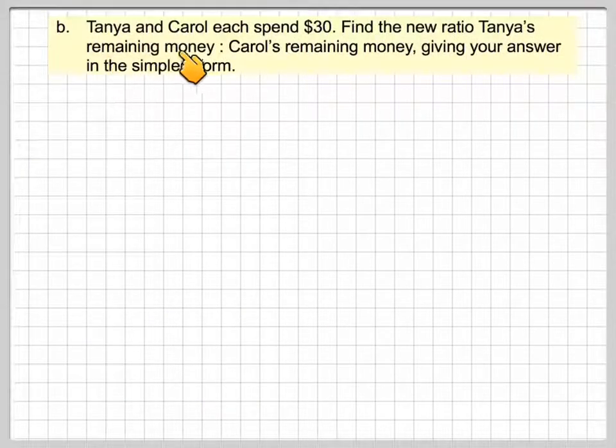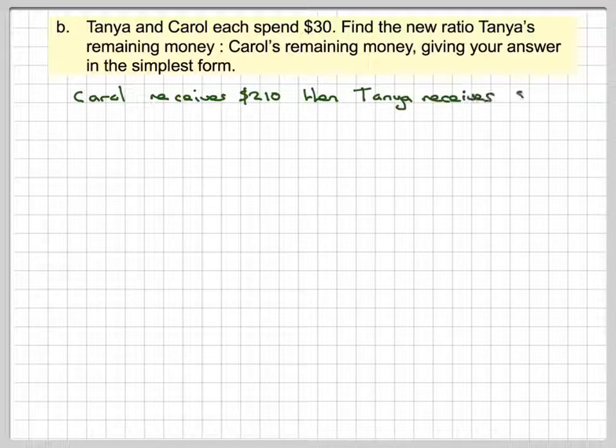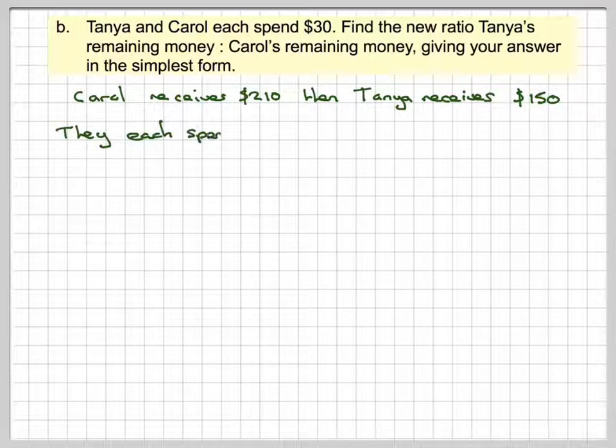Part B. Tanya and Carol each spend $30. What is the new ratio from Tanya's remaining money to Carol's remaining money, giving your answer in the simplest form? So Carol received 210, then Tanya will receive 150.